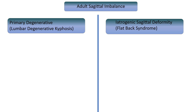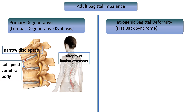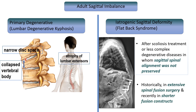Lumbar degenerative kyphosis is considered a form of sagittal imbalance caused by lumbar kyphosis or a marked loss of lumbar lordosis. The cause can be degenerative changes including disc space narrowing, collapsed vertebral bodies due to osteoporosis, and atrophy of lumbar extensor muscles. Iatrogenic sagittal deformity is a rapidly growing subtype that typically presents in patients after treatment for scoliosis or less complex degenerative diseases in whom sagittal spinal alignment was not preserved or was iatrogenically deteriorated. Historically associated with extensive spinal fusion surgery, it is now more frequently noted after shorter fusion constructs.